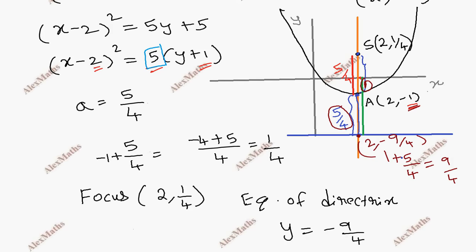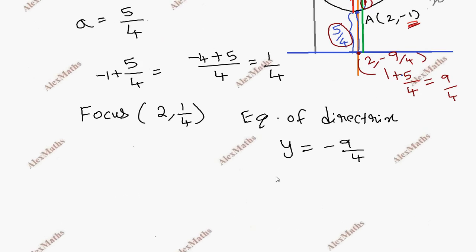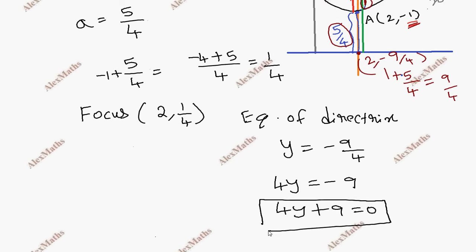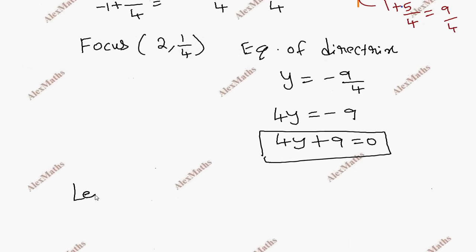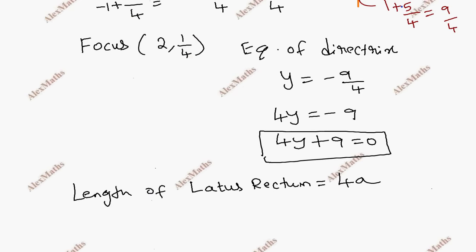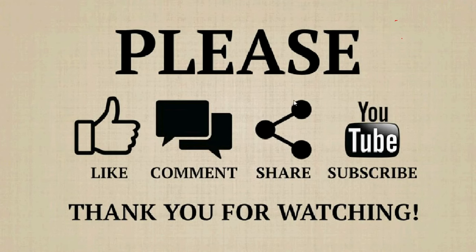The point is 2, minus 9 by 4. That is the directrix equation: y equals minus 9 by 4. Thank you.